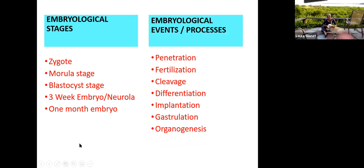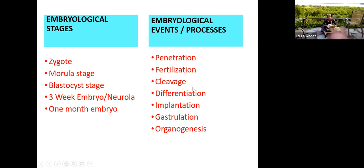We look at different embryological stages and the events and processes we kind of bulk together. Stages imply that they occur for a period of time, and the events or processes during that stage are listed to the right. We have stages of zygote, morula, blastocyst, three-week embryo, and one-month embryo — we're just going to cover it through the one month.